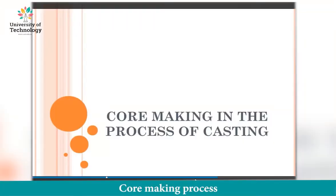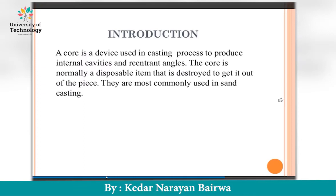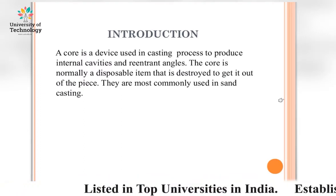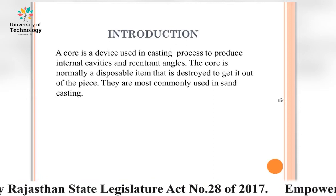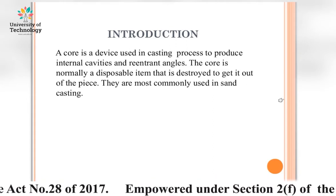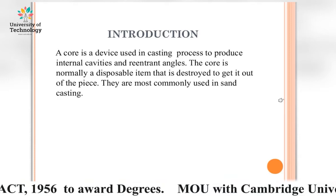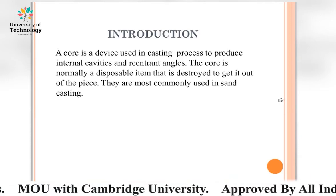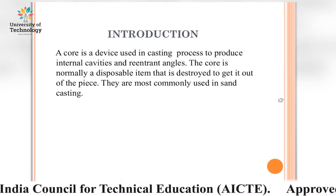This topic covers core making in the casting process, part of the manufacturing process fourth semester course. A core is a device used in the casting process to produce internal cavities and re-entrant angles. The core is normally a disposable item that is destroyed to get it out of the piece. Cores are most commonly used in sand casting.